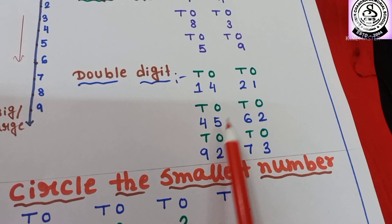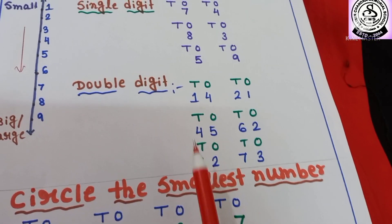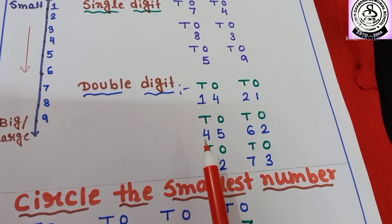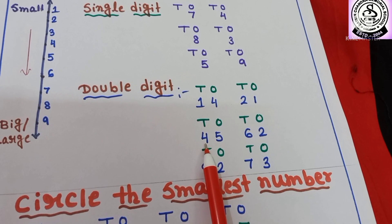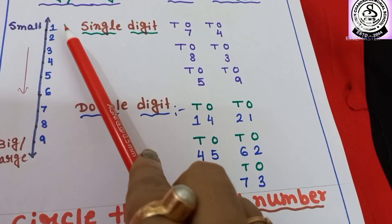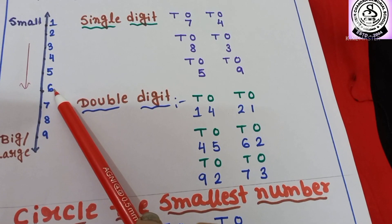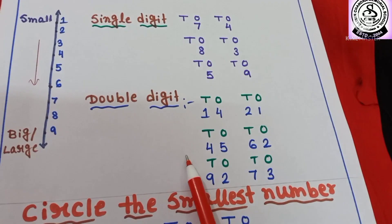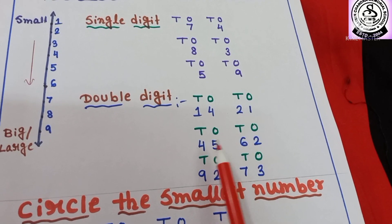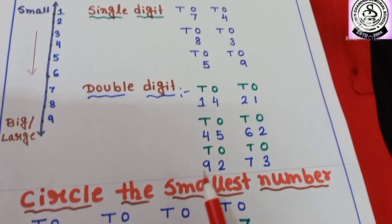Then here I have written 45 and then 62. In the same way you have to identify which one is small number. Here first digit is 4 and here first digit is 6. Counting: 1, 2, 3, 4, then 5, then 6. That means 45 is smaller than 62 and 62 is the bigger number. So you have to identify and circle it.